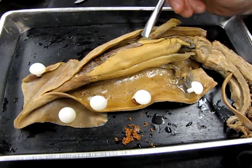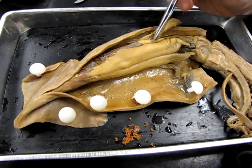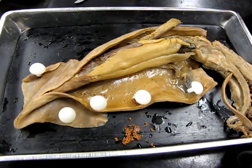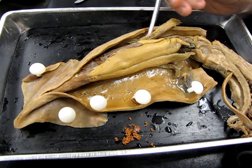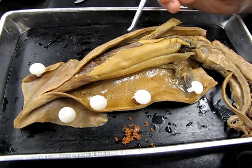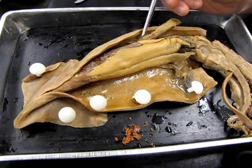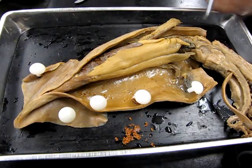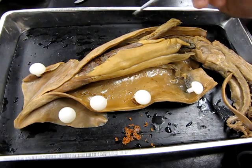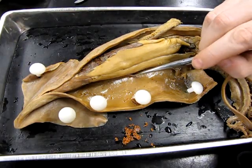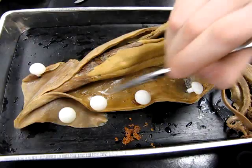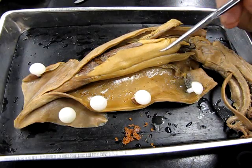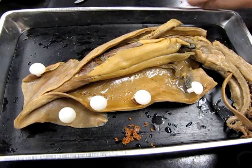Down here we have a small accessory gland called the oviductal gland. This actually produces the shells that go on the egg — so this creates the egg shell. There is an oviduct through which the ready-to-go eggs would pass before they were released.